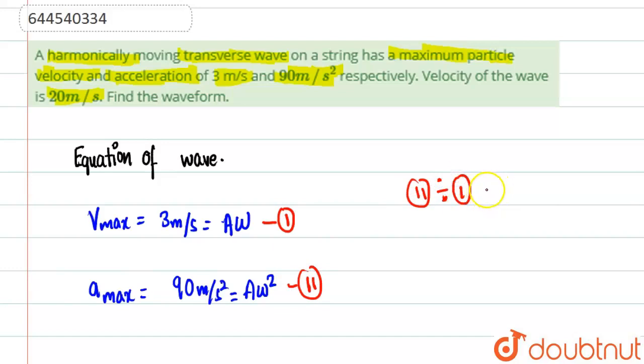That will give us the value of omega. So when we do two divided by one, we will have omega equal to 90 divided by 3, which will come out to be 30. So basically omega will be 30 radians per second.